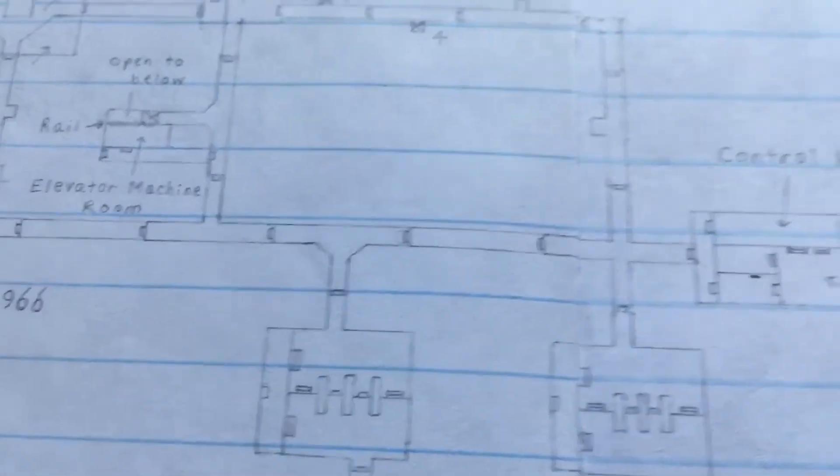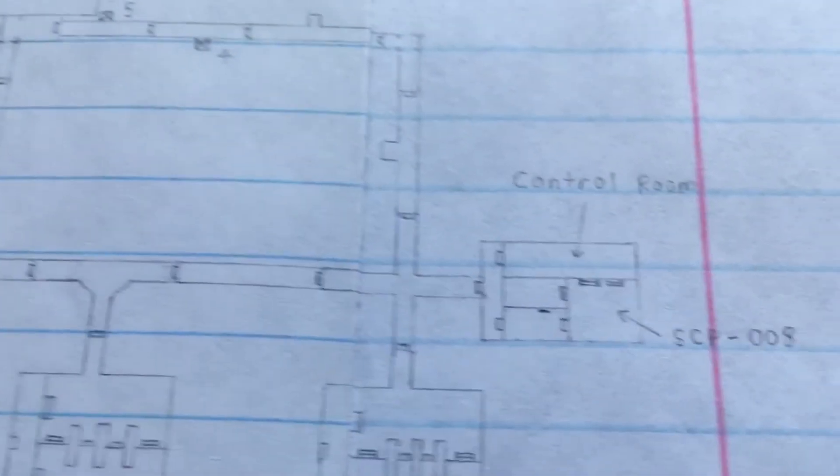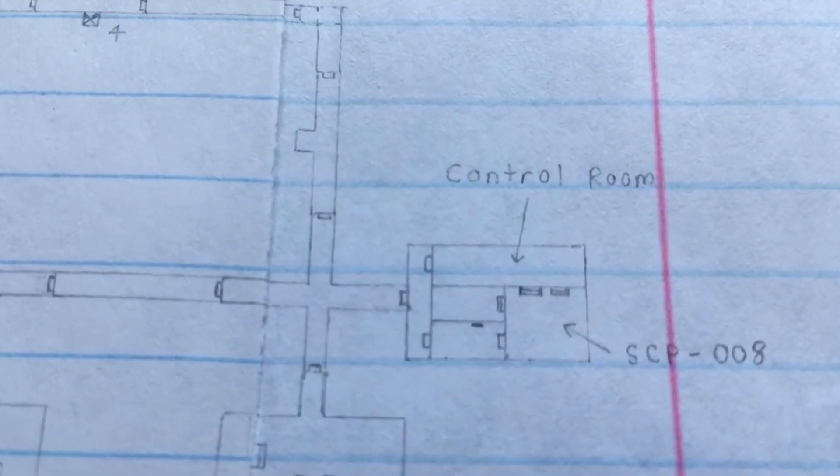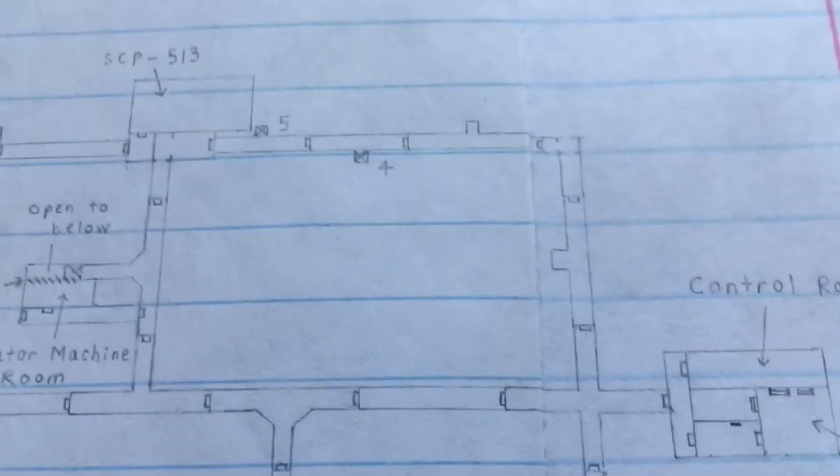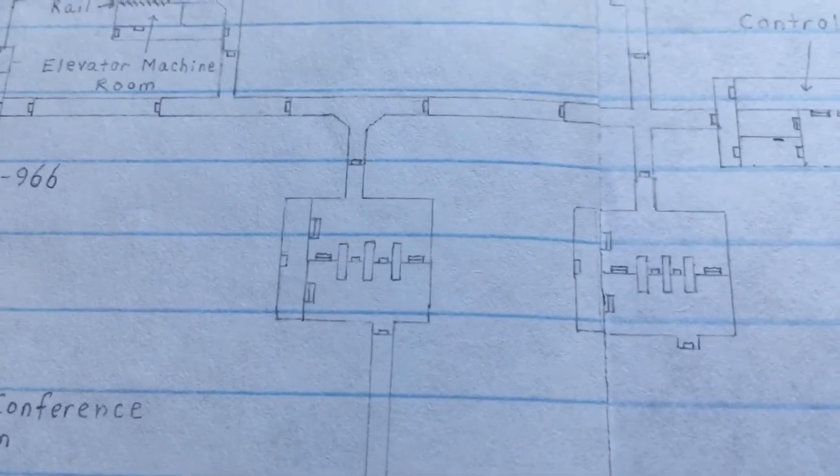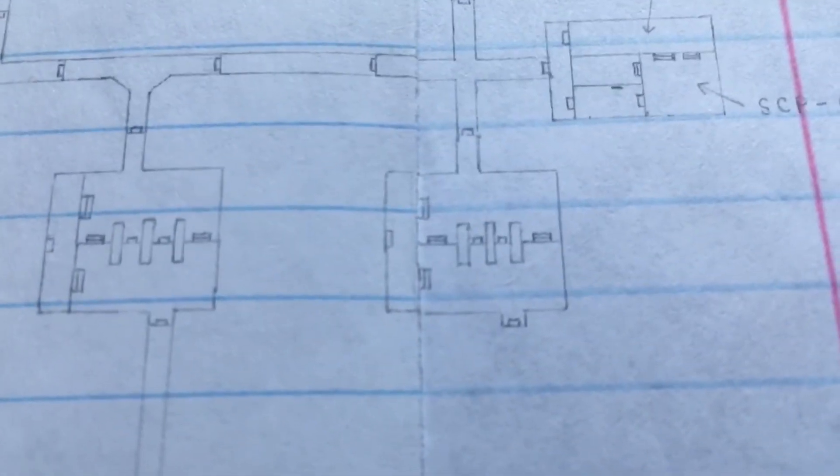Going down here, all that's really left is SCP-008, the zombie virus, which has a similar room to 035. And then there's only two checkpoint areas that lead to the entrance zone, one of them being a dead end.